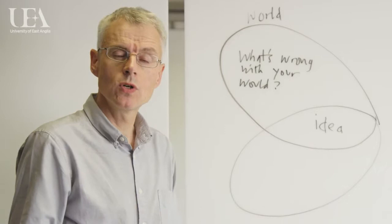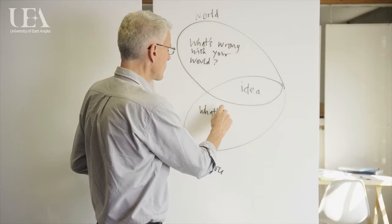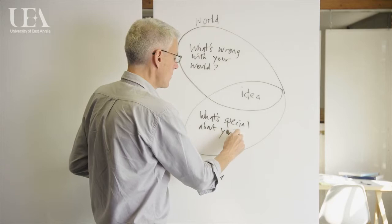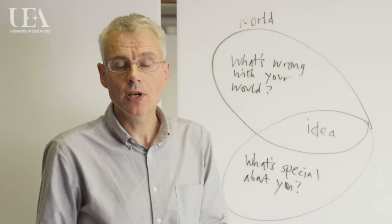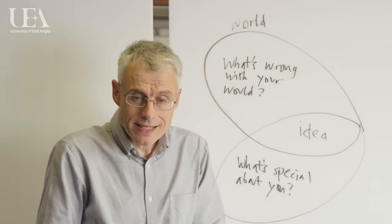And then the second circle is what's special about you. Not necessarily what's unique, not necessarily what's perfect, not necessarily what's true every day all the time, but you, on your best day as an organization, what is really interesting and special about you.